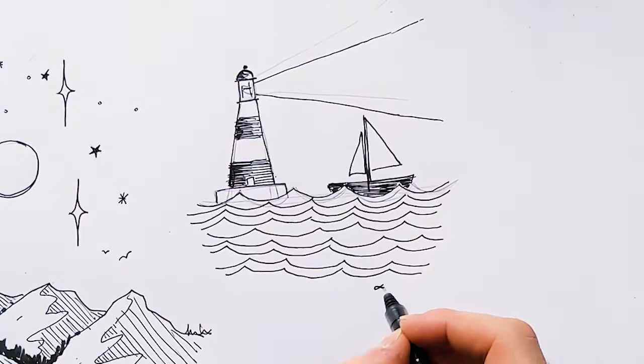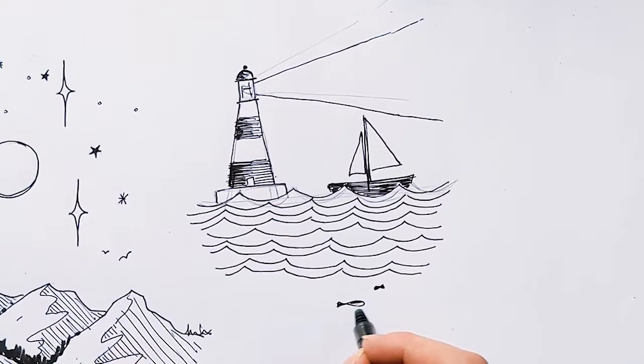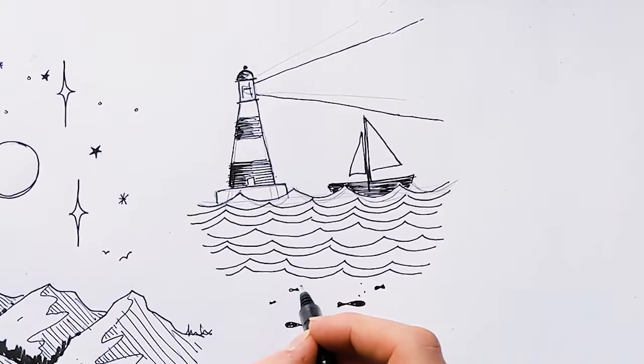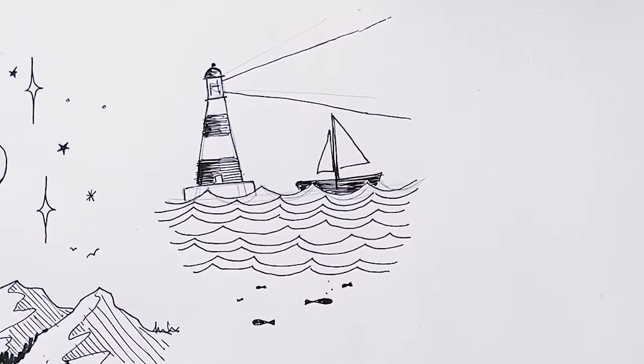And the final thing that I'm going to add is just a couple of fishes under the water. You can draw very simple shapes. And because of the illustration style that you're drawing in, it means that you can add them in quite easily. And there you go, that's your little water scene. We've got a lighthouse, a boat and some fish in there as well underneath the waves. What are you going to add to yours? Pause it and have a go.